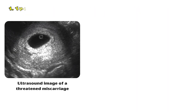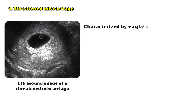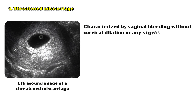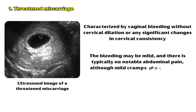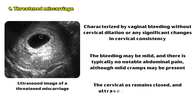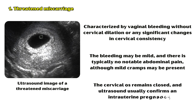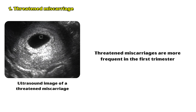The process of miscarriage can be classified into four stages based on the presentation of symptoms and findings from investigations. Threatened miscarriage is the initial stage, characterized by vaginal bleeding without cervical dilation or any significant changes in cervical consistency. The bleeding may be mild, and there is typically no notable abdominal pain, although mild cramps may be present. The cervical OS remains closed, and ultrasound usually confirms an intrauterine pregnancy. Threatened miscarriages are more frequent in the first trimester.